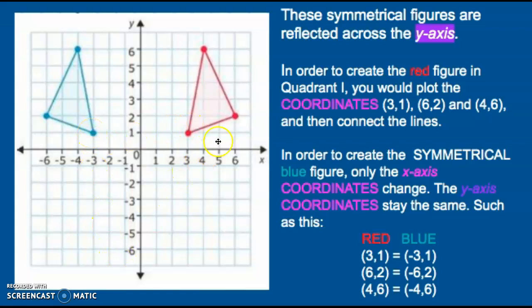The second coordinate, (6,2), is reflected across the y-axis as (-6,2). Again, we've moved to the other side of the y-axis, therefore the x-coordinate changes. However, the y-axis coordinate remains the same, because it's the same height.